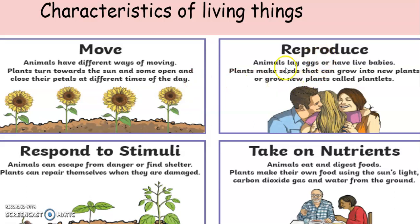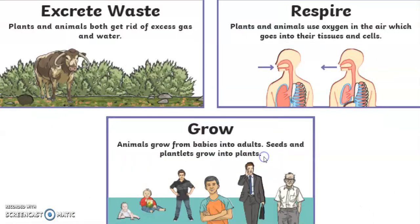Living things reproduce. Animals lay eggs or have their babies. Plants make seeds that can grow into new plants or bloom. Living things also respond to stimuli and take on nutrients as I mentioned. And they grow.